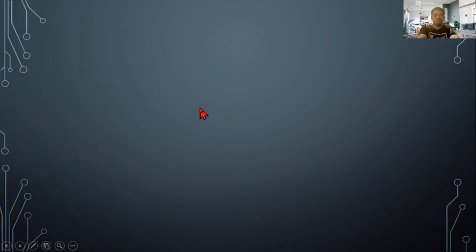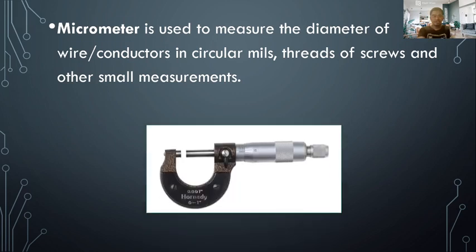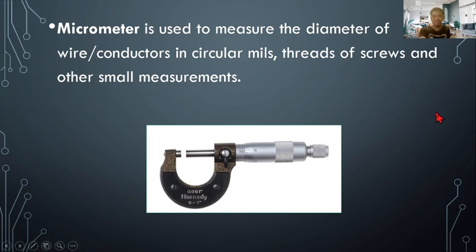Next we have the micrometer, used to measure the diameter of wires, conductors in circular mils, threads of screws, and other small measurements. This photo of a micrometer shows the gap where you place the specimen that you are going to measure.